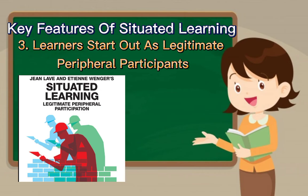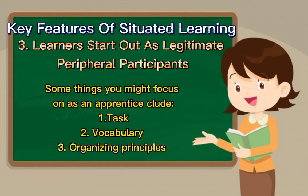In their teaching method, students are embedded in real-world contexts. They follow actual practitioners around to observe their practice and learn from them through guided practice. As you gain experience and competence, you start taking on more and more responsibility, becoming a more central member of the community of practice. Some things you might focus on as an apprentice include: number one, tasks — doing tasks for the group that help build skills and competence. Number two, vocabulary — learning the language of the community of practice.